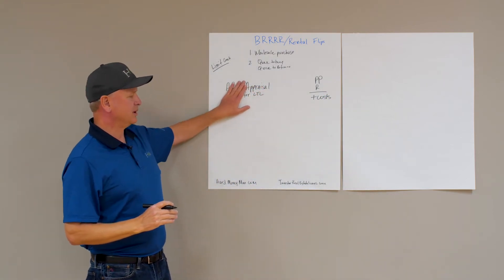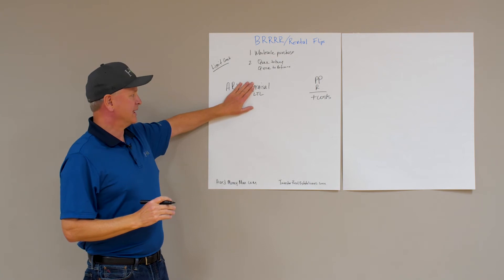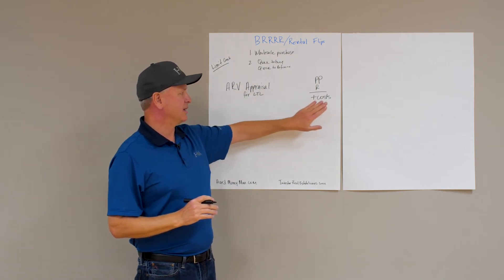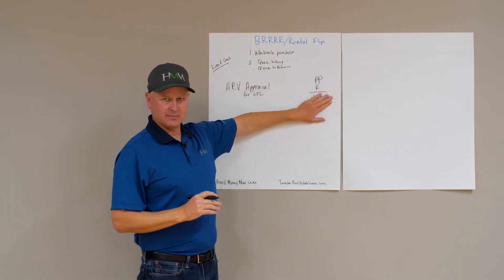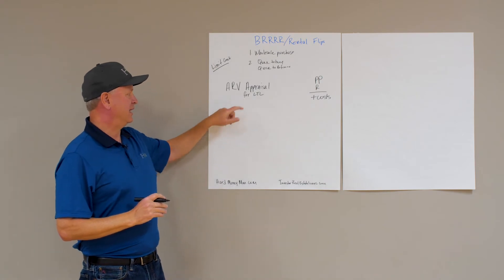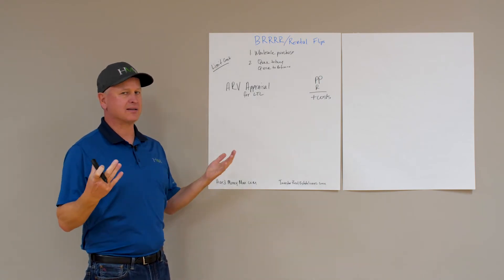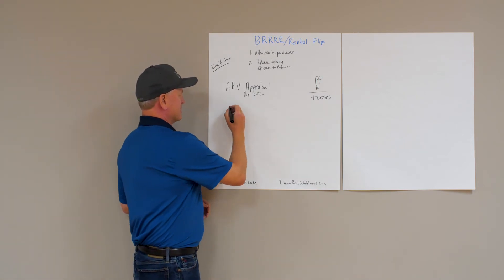We're not going to base your long-term loan on what you have into the property if this is set up correctly. We're going to value it off the appraised value. So how does that look? Let's look at a simple example.